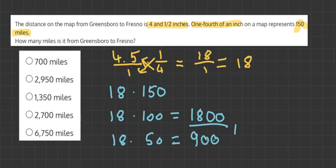Now we just have to add these two numbers together: 1800 and 900, which gives us the final answer of 2700. When we look at the answers on the left, we can see 2700 miles is the fourth option down, and it is our final answer.